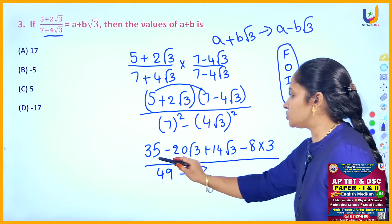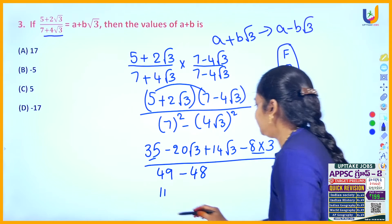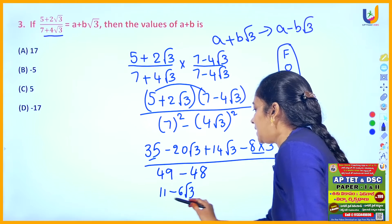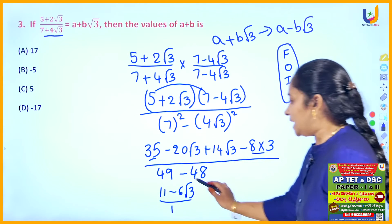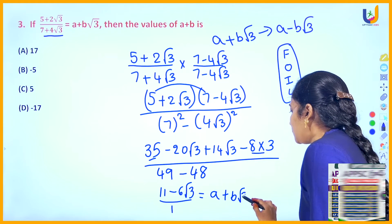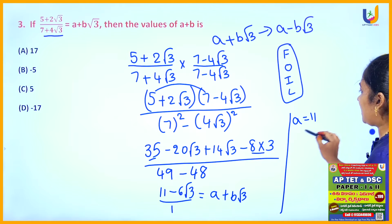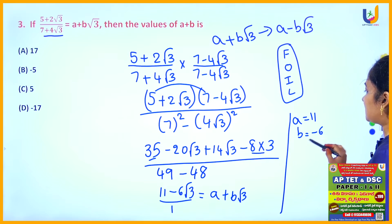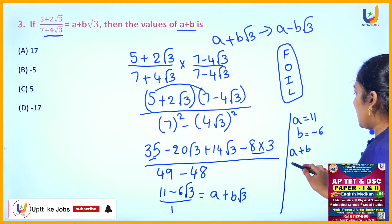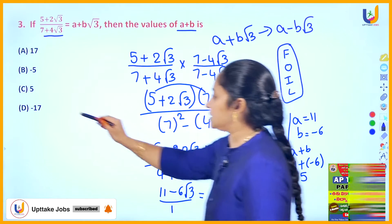Simplifying the numerator: 35 − 24 = 11, and −20√3 + 14√3 = −6√3. So the expression reduces to 11 − 6√3 over 1, which equals a + b√3. Comparing LHS and RHS, a = 11 and b = −6. The question asks for a + b, so a + b = 11 + (−6) = 5. The answer is option C.